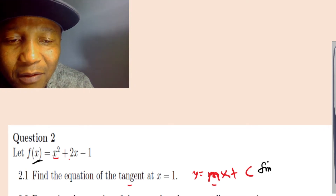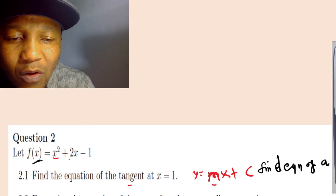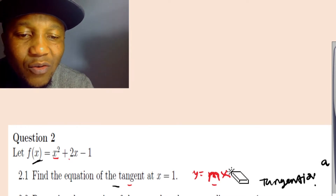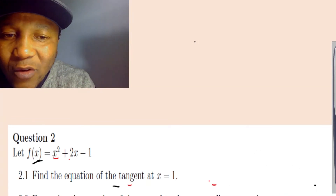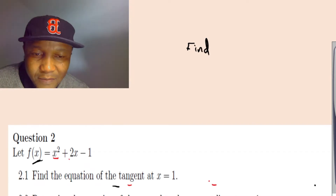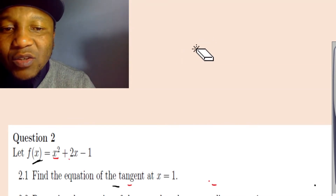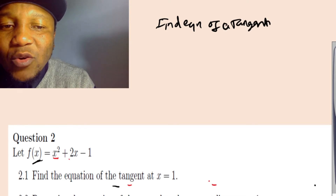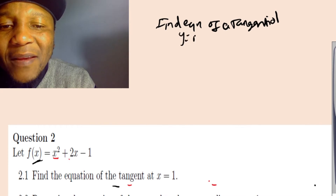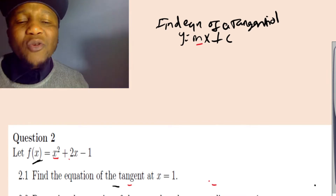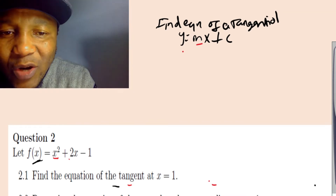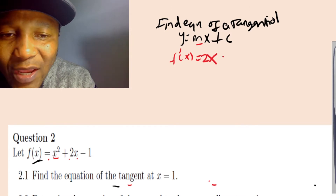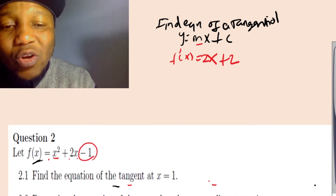So first, find the equation of the tangent. The tangent equation is y = mx + c. First we need to get m, the slope. So f'(x) — the derivative of x² is 2x, and the derivative of 2x gives 2, and the derivative of the constant -1 gives 0. So f'(x) = 2x + 2.